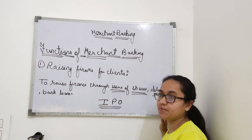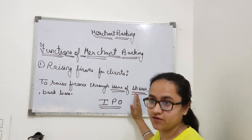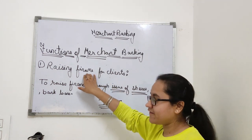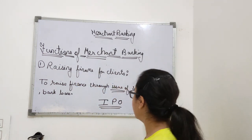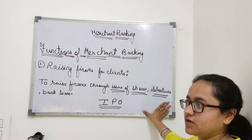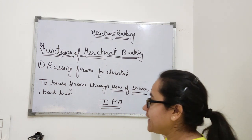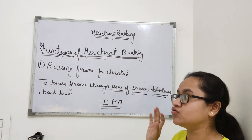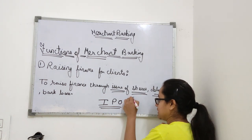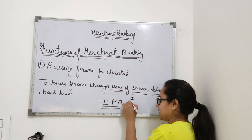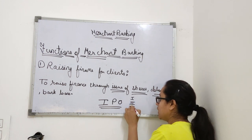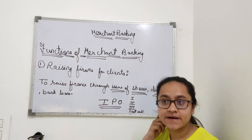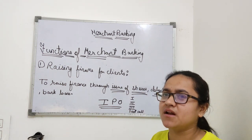The IPO, or initial public offer, is for new companies. We issue shares to new companies to raise finance. We also issue debentures to the public. Payments are received through calls — first call, second call, third call, and last call.